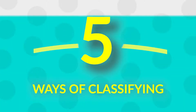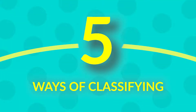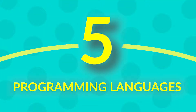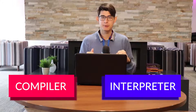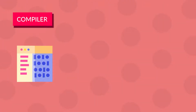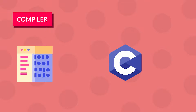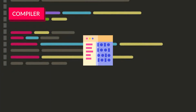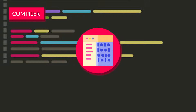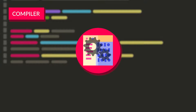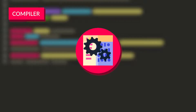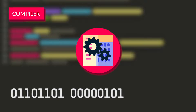This is the five ways of classifying programming languages. The next one is programming languages that use a compiler versus an interpreter. With a compiler — for example, C++ or C use a compiler — the compiler is a program that takes all the source code and translates it directly into machine code.